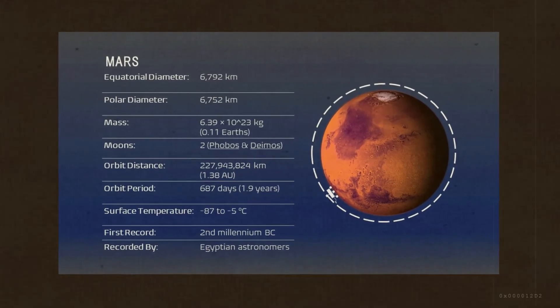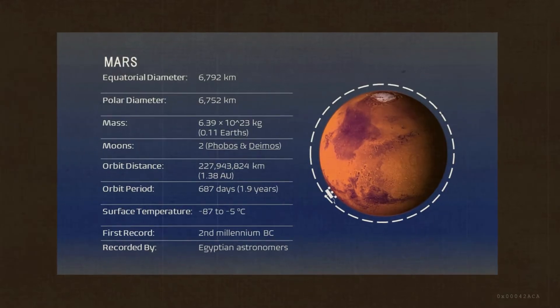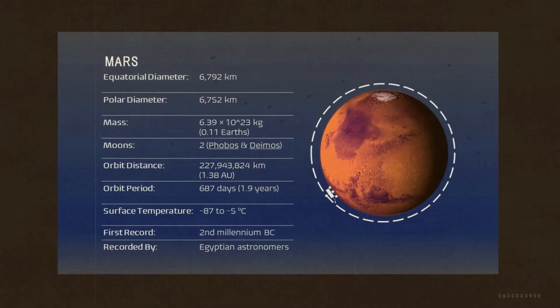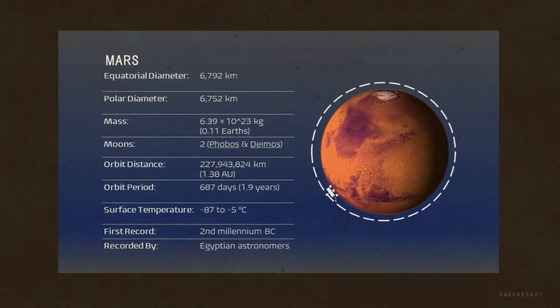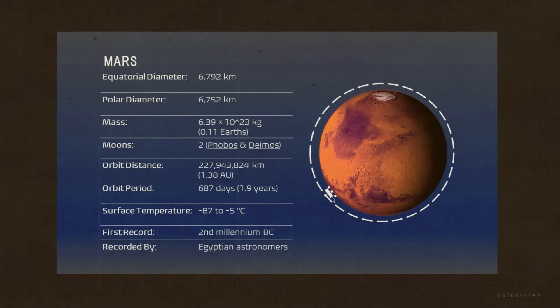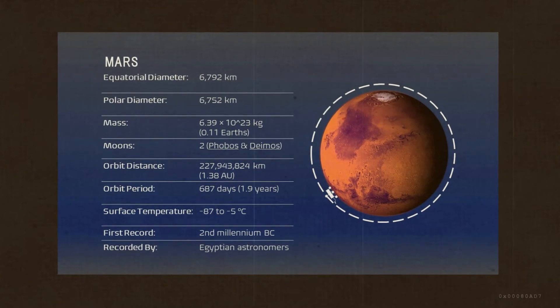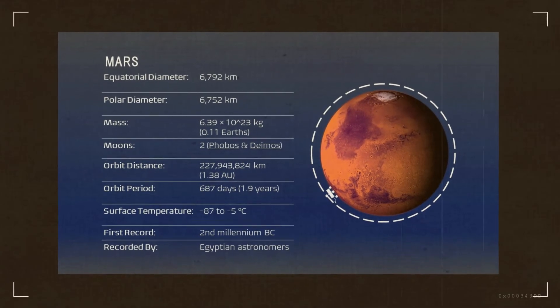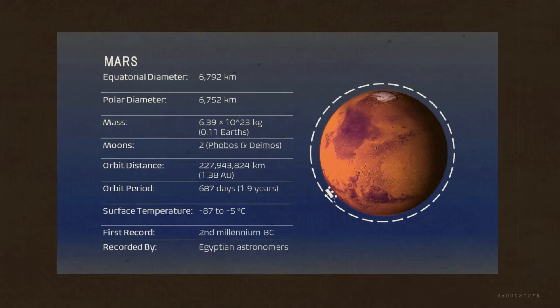Named after the Roman god of war, Mars is the home for the tallest mountain in our solar system, the Olympus Mons. The Mars surface is full of iron oxide, also known as rust, that gives it its reddish color. Mars has the largest dust storms in our solar system ever recorded.